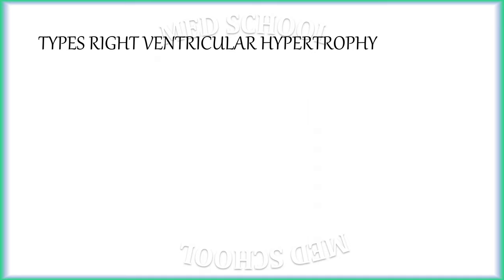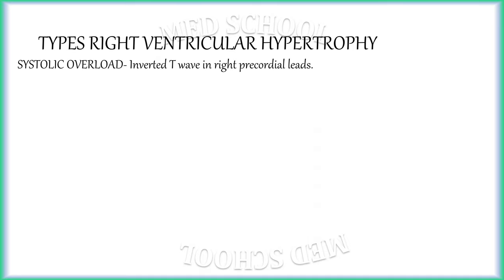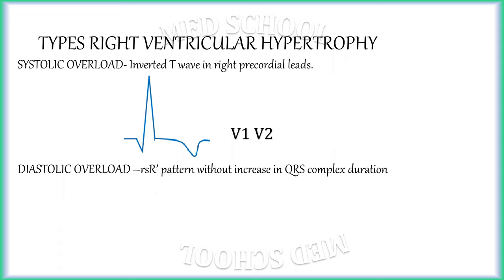Right ventricular hypertrophy is also of two types. First, RVH due to systolic overload, where the right ventricle has to pump against increased resistance — examples include pulmonary stenosis, pulmonary hypertension, etc. In this condition, right precordial leads will show inverted T waves along with changes of RVH. Second, RVH due to diastolic overload, where the right ventricle is filled with excessive blood during diastole — examples include tricuspid valve incompetence, atrial septal defect, ventricular septal defect, etc. In this condition, right precordial leads will show incomplete right bundle branch block, that is RSR' pattern without QRS prolongation.